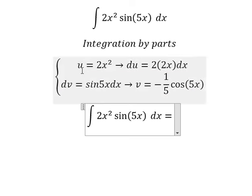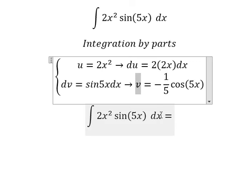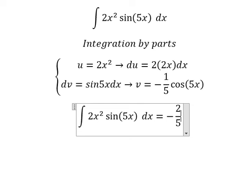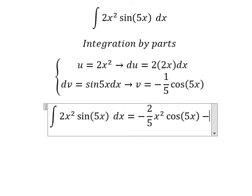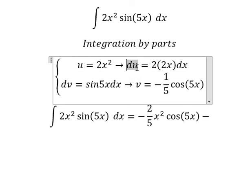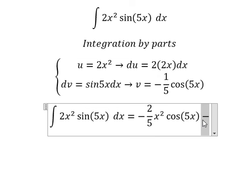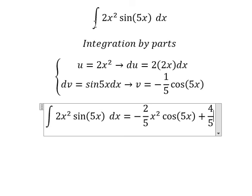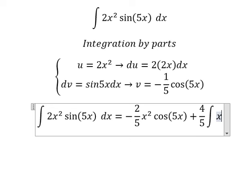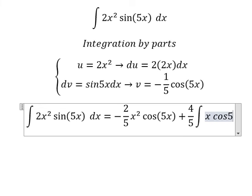So we have u multiplied by v. Minus, we have du multiplied by v. Because we have the negative here, negative with negative, we got positive. Number 2 and number 2, we have number 4. So we have 4 over 5, and we have the integration of x cosine 5x dx.